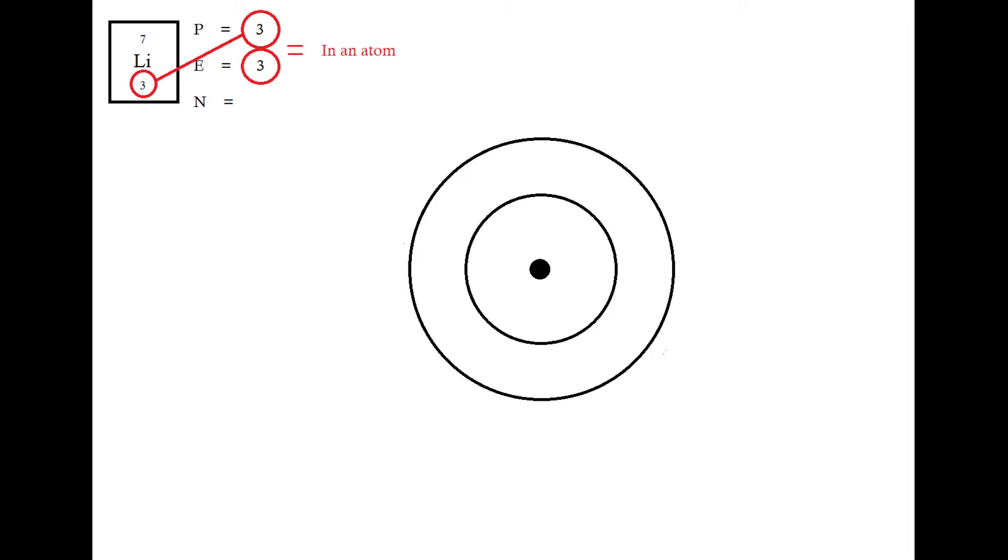Now the mass number tells us how heavy the atom is. And as you know, the mass number is made up of the numbers of protons and the neutrons. The electrons aren't included, but that's not because they don't weigh anything, but just because they weigh so little that they barely affect the overall mass. So if we know that the number of protons and neutrons together is seven, and we've already figured out that there are three protons, we can do a little calculation and work out that the number of neutrons must be seven minus three, which is four. So we have four neutrons.